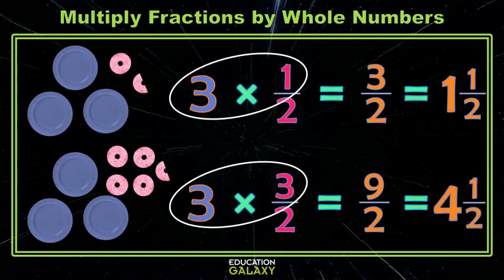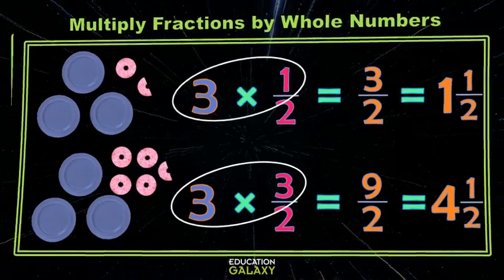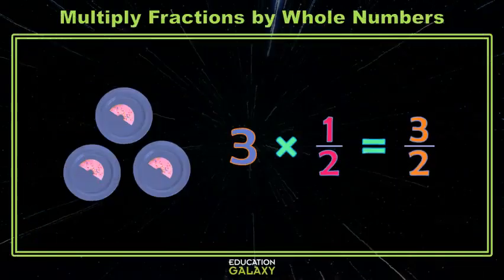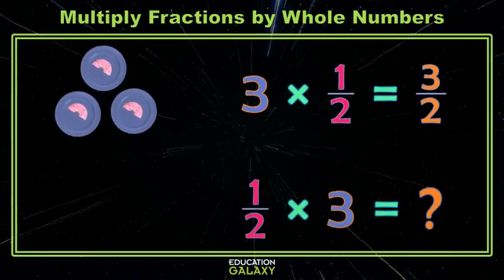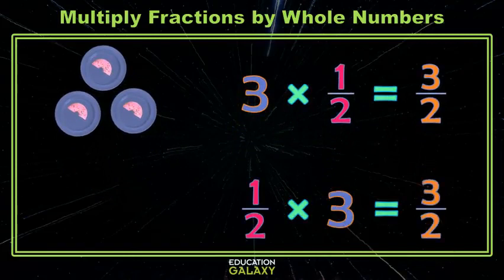So now that we understand multiplying our whole number by a fraction, some of you might be wondering, is that the same thing as if I multiply the fraction by the whole number? Well, as you may have learned, if our only operation is multiplication, we can multiply in any order and we will get the same answer. But does it represent the same donut situation?